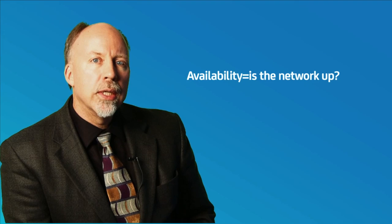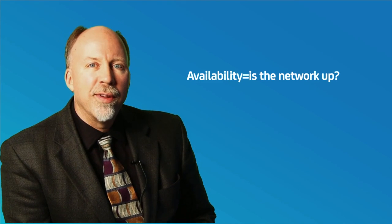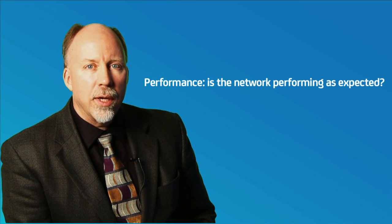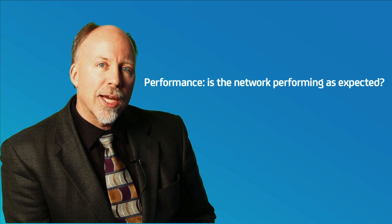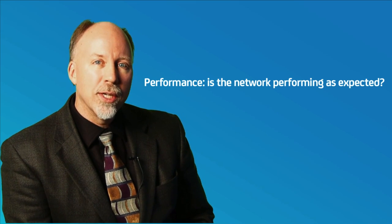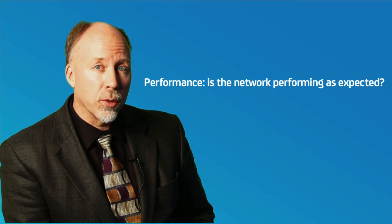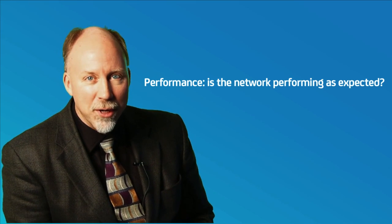Availability and performance are similar in some ways and different in others. Availability is just about whether the network is up. Performance is about whether the network is doing what it's supposed to be doing. Performance management is actually a superset of availability, because in the worst case scenario, if performance is degraded infinitely, it's no longer available. So if you adopt a performance management strategy, you can and should incorporate the original objectives of availability monitoring.